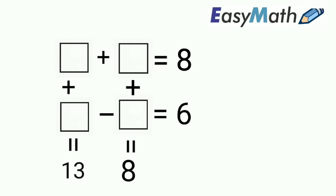In the row, the summation of the first two boxes is equal to 8 and the subtraction of the second two boxes is equal to 6. The summation of the first two boxes in the column is equal to 13 and the summation of the second two boxes is equal to 8.